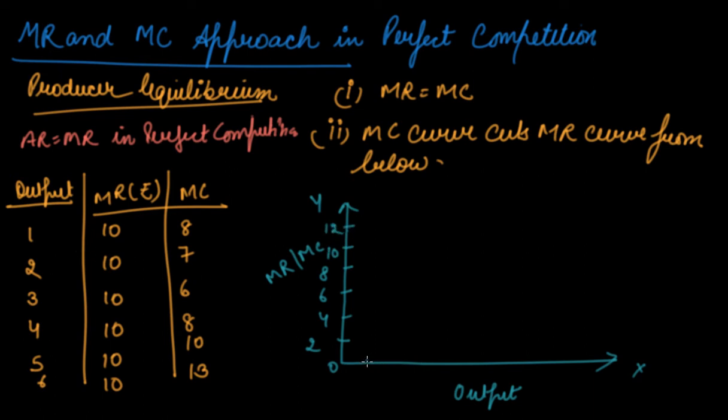Same output will take one, two, three, four, five, and six. Now let's take the points. Your MR is constant everywhere, which is your ten.